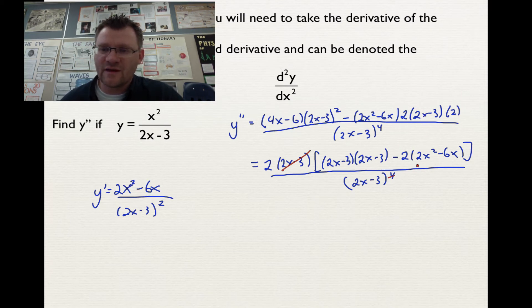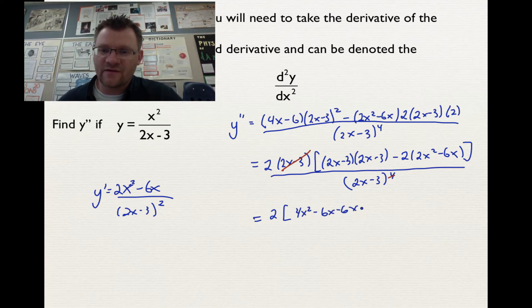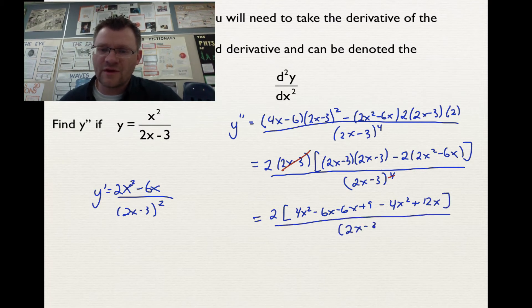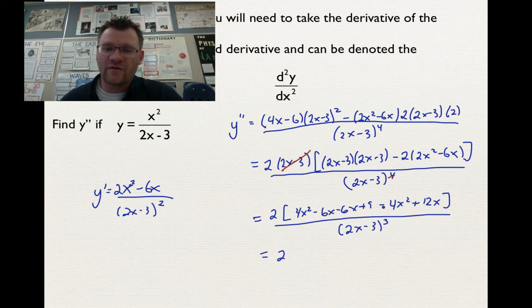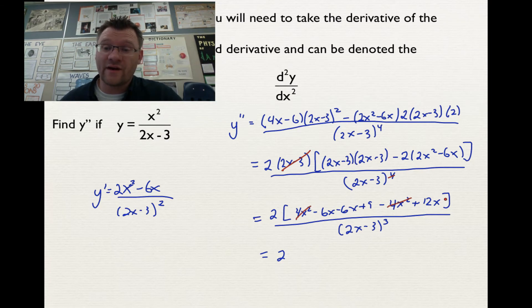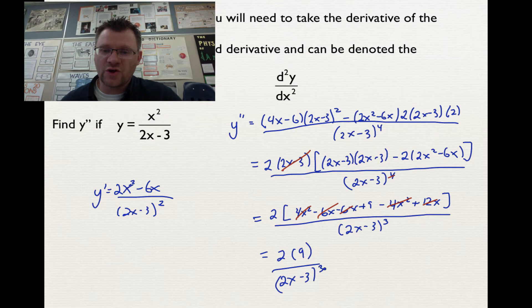Expanding inside the brackets and combining like terms, I get a 2 on the outside. (2x minus 3) times (2x minus 3) is 4x squared minus 12x plus 9, and here I have negative 4x squared plus 12x. That's all over (2x minus 3) to the power of 3. Combining like terms: 4x squared minus 4x squared cancels, negative 12x plus 12x cancels, so I just get 9 inside the brackets. 9 multiplied by 2 over (2x minus 3) cubed gives a final answer of 18 over (2x minus 3) cubed.